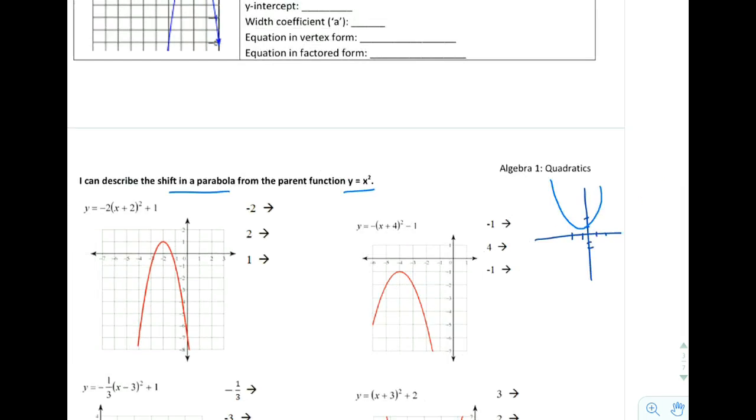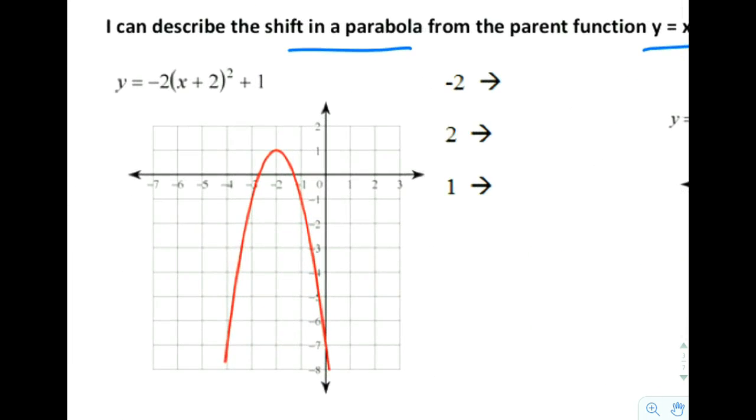So let's go ahead and look at this first example here. We have it written in vertex form and out front we have a negative 2. That negative 2 is the a term.